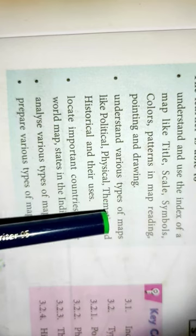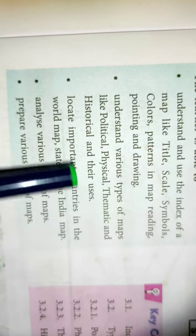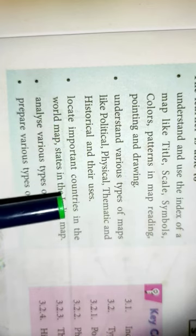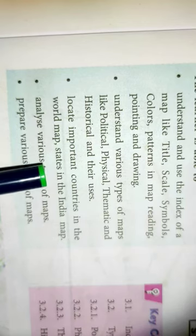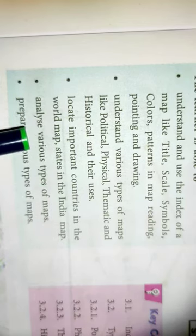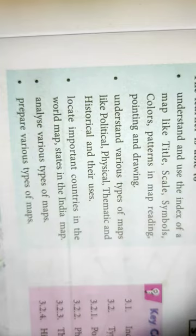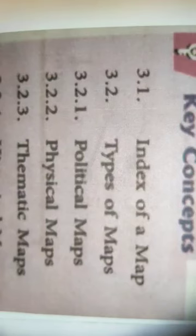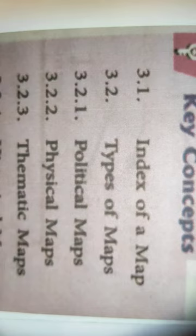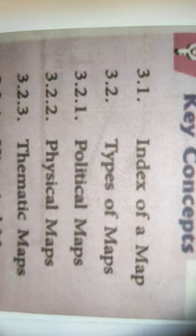At the end of the session, you will be able to understand and use the index of a map — like title, scale, symbols, colors, and patterns — in map reading, pointing, and drawing. You will understand various types of maps like political, physical, thematic, and historical, and their uses. You will also locate important countries in the world map, states in India map, analyze various types of maps, and prepare various types of maps.